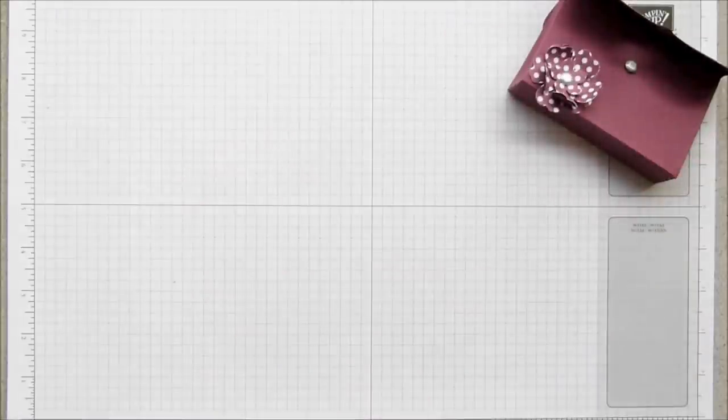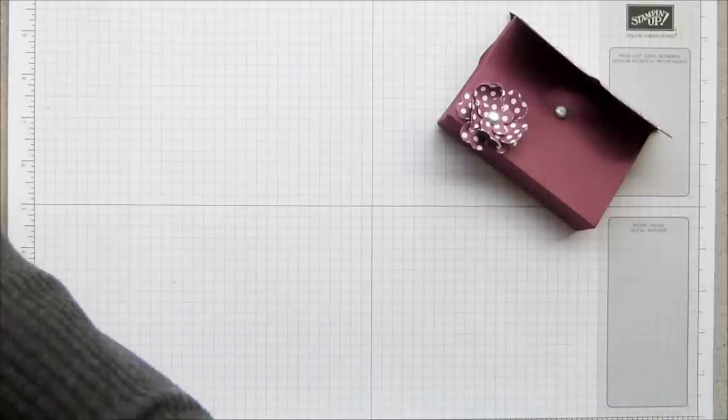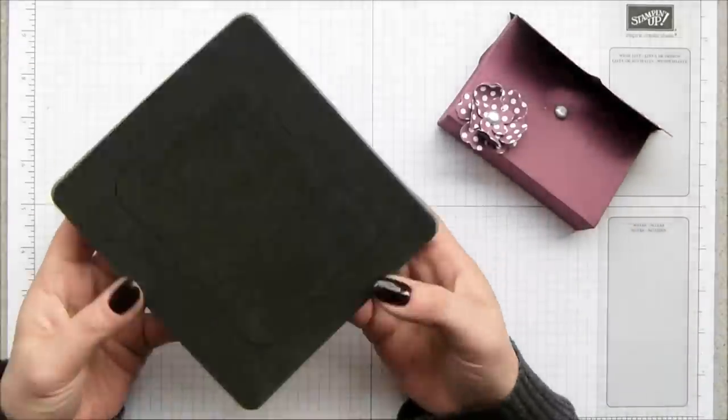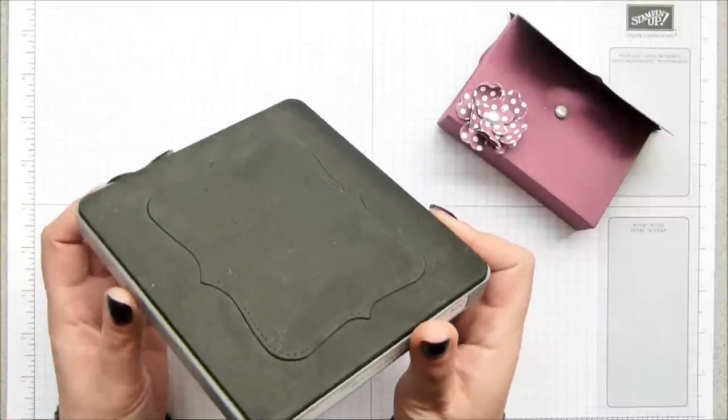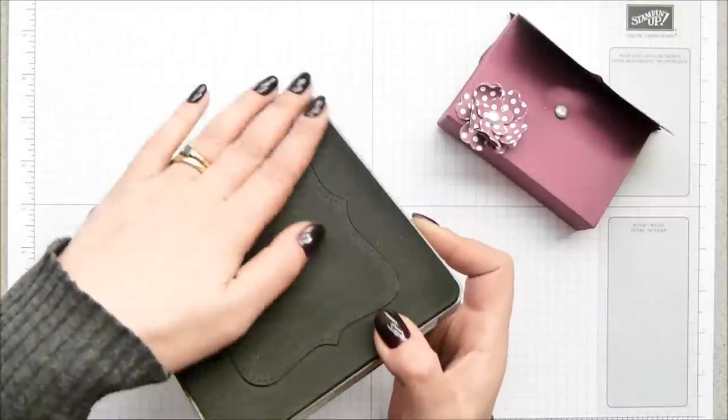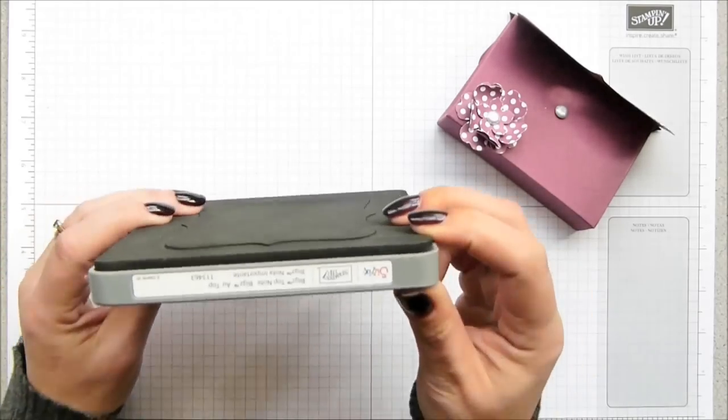First thing we need is the top note die. It's a big sizzix die. It's a great shape, there's loads and loads of different projects you can make with it.